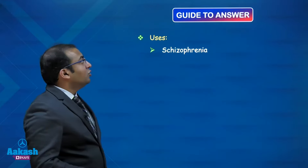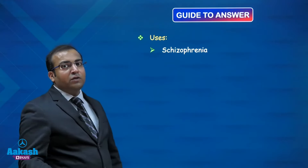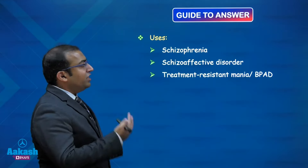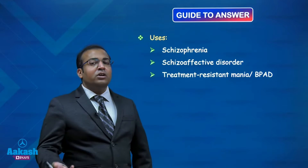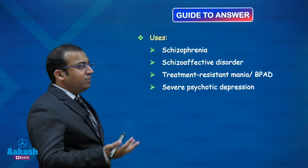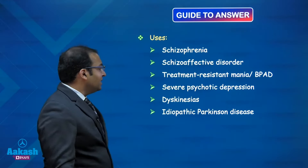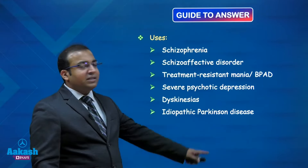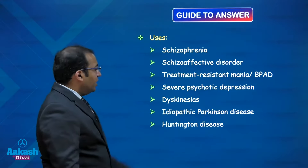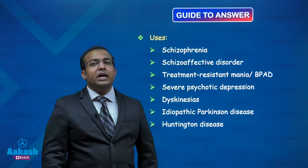Because of its low dopaminergic occupancy, patients on clozapine have fewer extrapyramidal or Parkinson-like side effects. Clozapine is used in the management of psychotic disorders like schizophrenia and schizoaffective disorder, treatment-resistant cases of bipolar disorder and mania, severe psychotic depression, movement disorders like dyskinesias, idiopathic Parkinson-like symptoms, and movement troubles in patients with Huntington's disease.